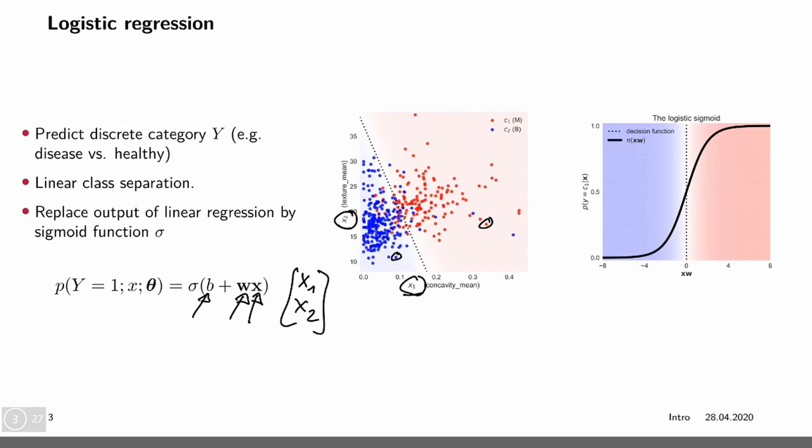However, we want to predict a class label. Logistic regression uses a trick by taking this continuous x times w and squashing it through a sigmoid function. The sigmoid squashes this to a number between 0 and 1 with this S-curved function, denoting the probability of class 1, the red class. By symmetry, the probability of the blue class is 1 minus that.